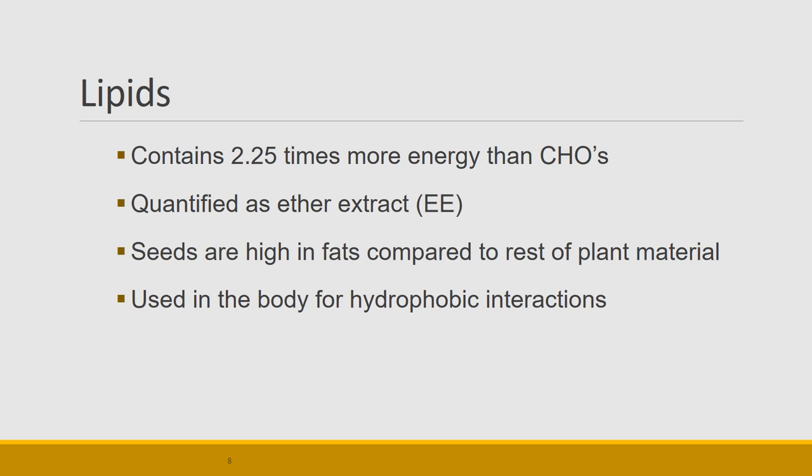Lipids are our fats and the most energy-dense nutrient. In the lab we use ether extract (EE) to remove lipids from forage compounds, then multiply by 2.25 so the value is comparable to carbohydrates — meaning lipids contain 2.25 times more energy than carbohydrates. There aren't a lot of lipids on rangelands, but they are found in seeds; acorns, for example, are a good source. Lipids are also important because many body processes are hydrophobic and require lipids to be completed.